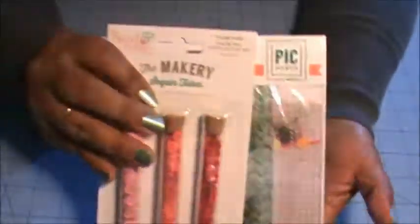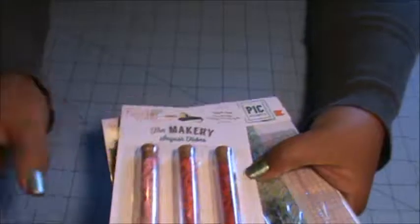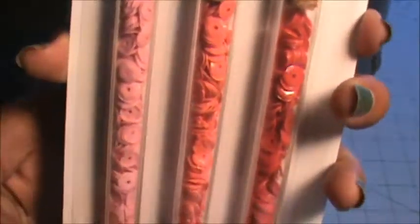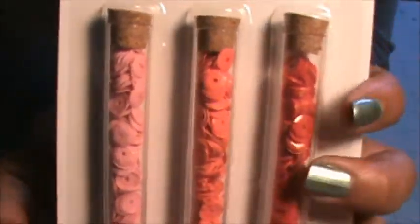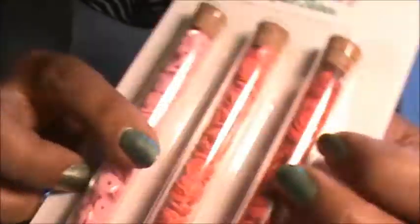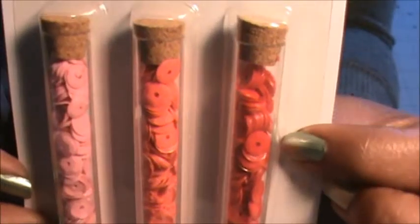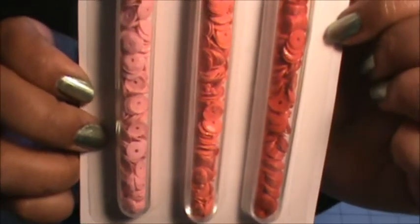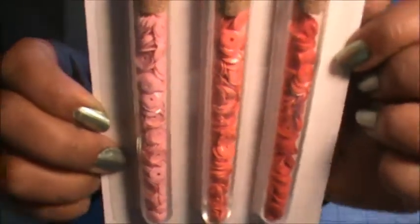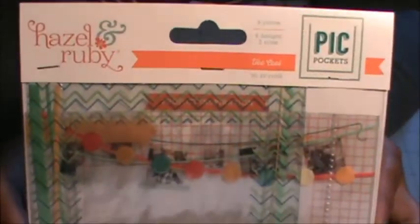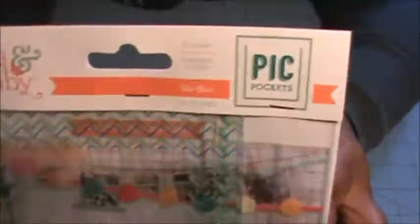We got two products from Hazel and Ruby. The first thing we got are a three-pack of sequins in this cute test tube looking thing. We got pink, we got this coral color, and this red, and we got a good amount of sequins. I really like those.